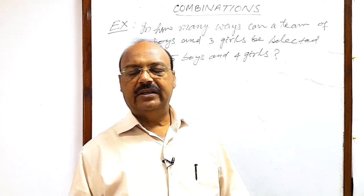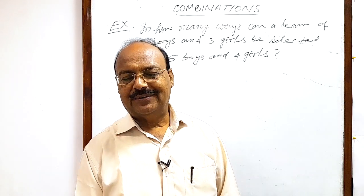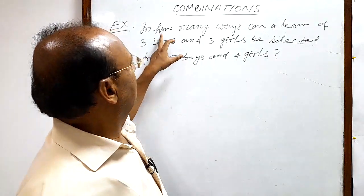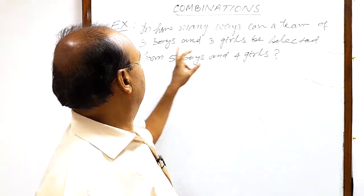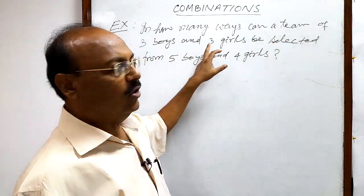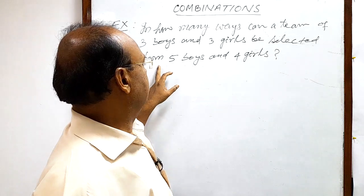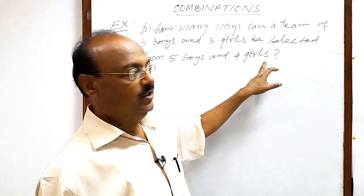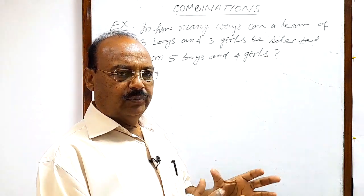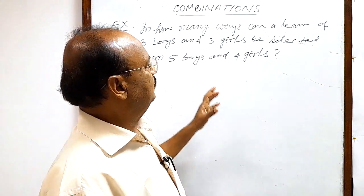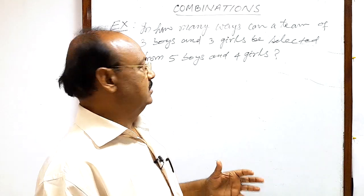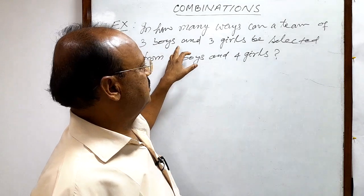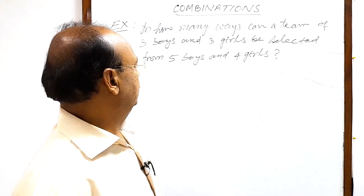Let us see a very simple and interesting question from the topic combinations. The question is: in how many ways can a team of three boys and three girls be selected from five boys and four girls? So we have to form a team of six persons where there will be three boys and three girls.